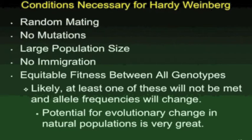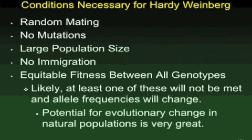No populations actually meet these assumptions. You can use this formula to figure out which assumptions are not occurring in a particular population and get some idea of the source of change. Maybe it's coming from the fact that there are a lot of mutations occurring, or maybe you're just looking at a small remnant of a population. We can identify the driving factor behind population change by evaluating the formula and looking at which assumptions are not being met.